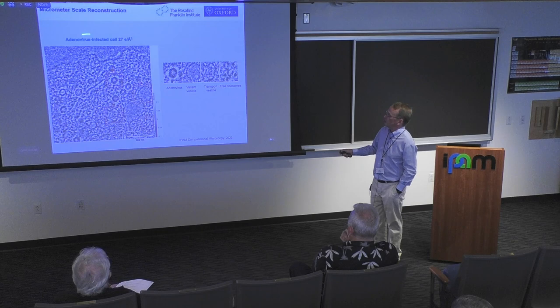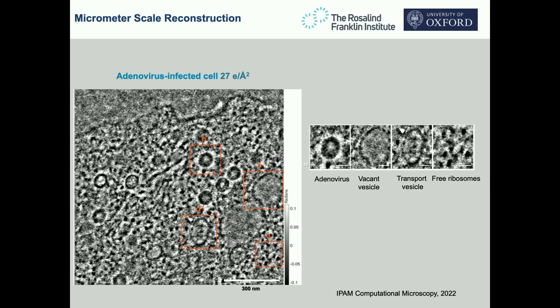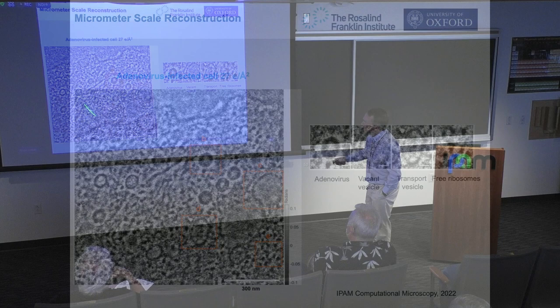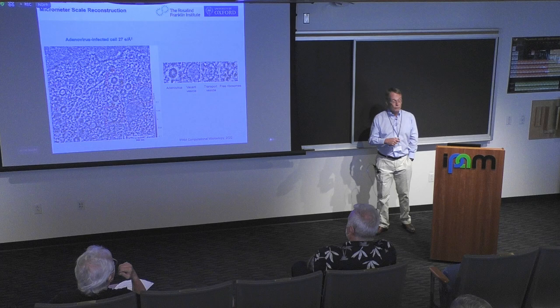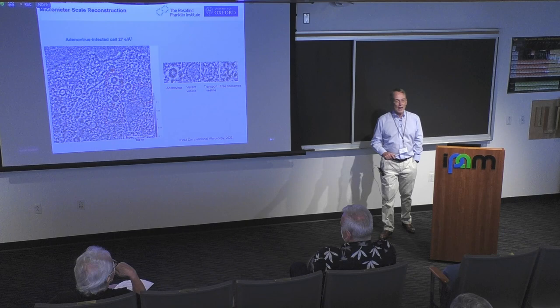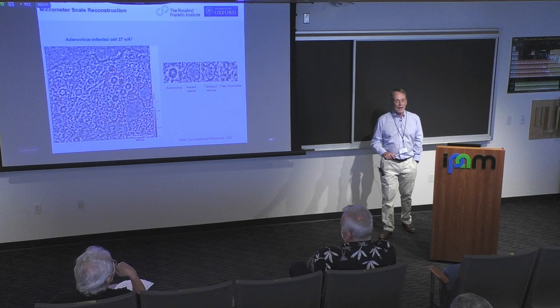Wide-field ptychography of an adenovirus-infected cell at 27 electrons per square angstrom over a couple of microns reveals adenoviruses, a vacant vesicle, transport vesicles, and free ribosomes — all cellular components recovered quantitatively. This experiment used 4,000 by 4,000 probe positions, requiring extreme stability or models to deconvolve probe drift and jitter, which would also enable wider fields of view that biologists really want.